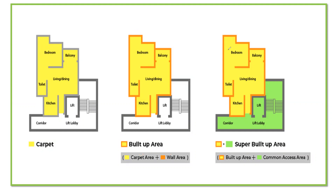Super built-up area is the built-up area plus the common area access — meaning it includes the carpet area, the wall thickness (built-up area), plus the common areas such as the staircase, lift portion, and lobby. This super built-up area and the corridor, lift lobby and all will be common for both houses in the building.